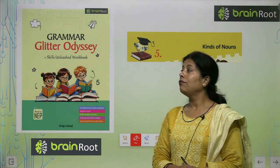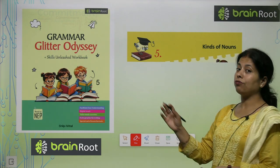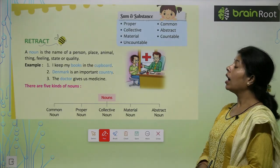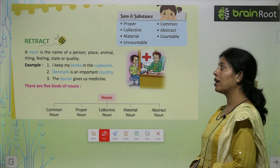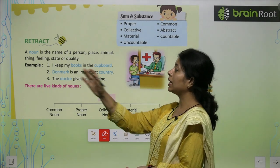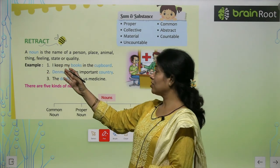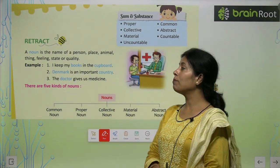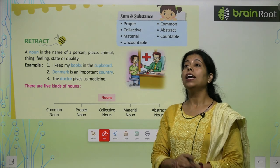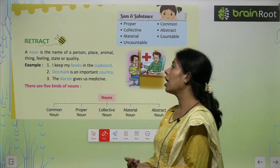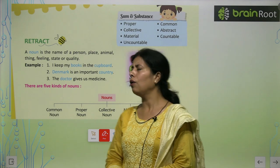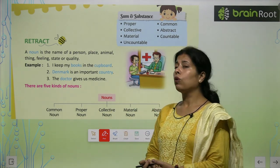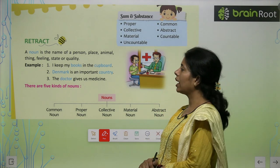Today we will learn chapter 5: Kinds of Nouns. A noun is a name of a person, place, animal, thing, feeling, state, or quality. यह definition class 1 से हम पढ़ते आ रहे हैं — किसी चीज़ का नाम, चाहे वो person का हो, place का हो, animal का हो, या कोई feeling, state या quality हो। Quality को भी हम noun कहते हैं।